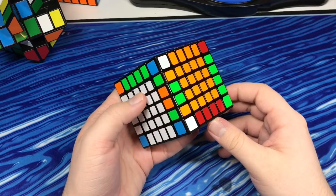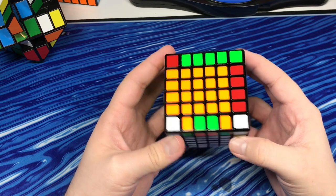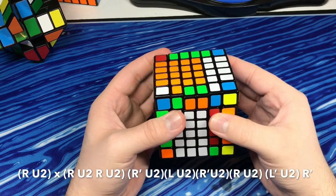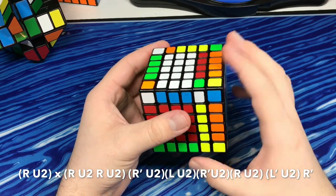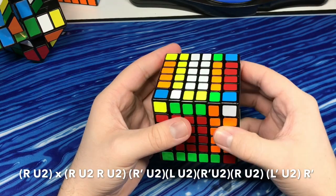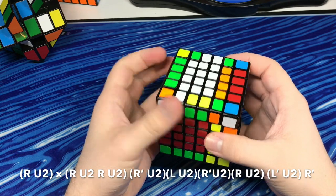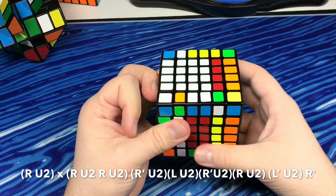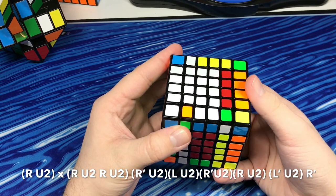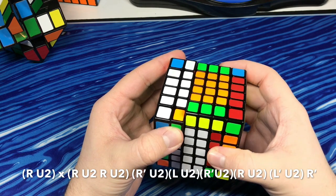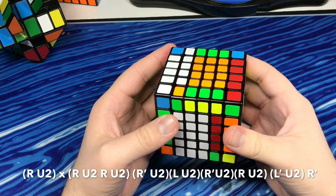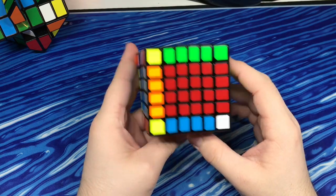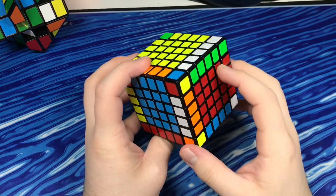Okay, so when you have edge parity like this, the algorithm that you need to learn goes like this. You do a rotation. And then right here, you move this layer up, but you move the whole cube like this. Do U2, then R'. So at this point, you should have all the centers solved and the edges.